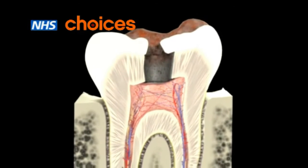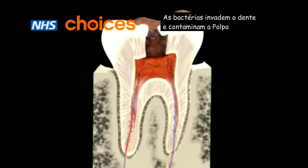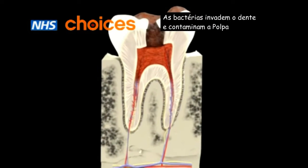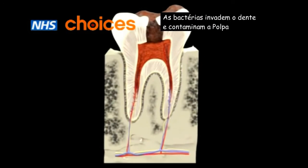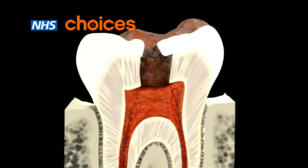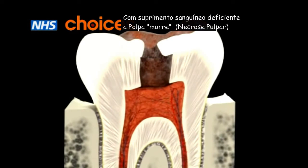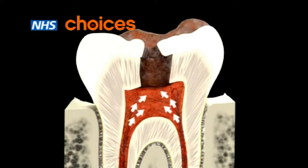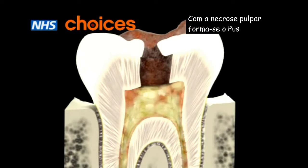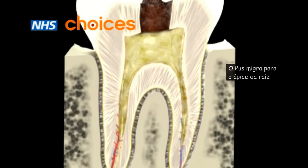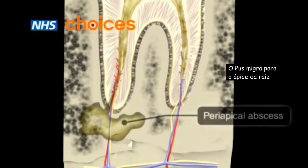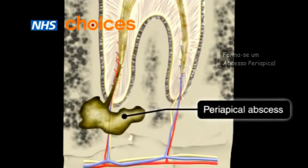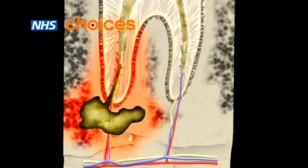The holes allow bacteria to invade the tooth and destroy the tooth pulp. White blood cells then pour into the affected area and pus forms, producing a periapical abscess — the most common type of dental abscess.